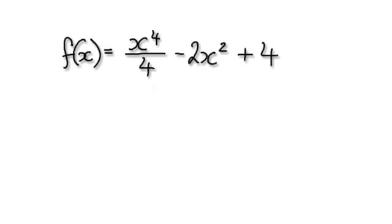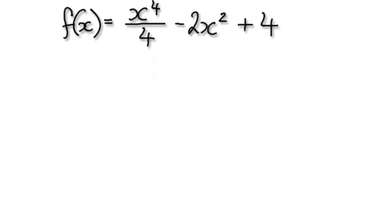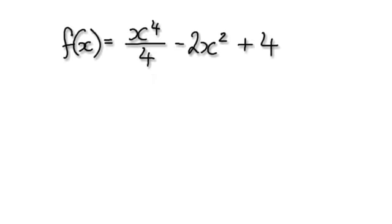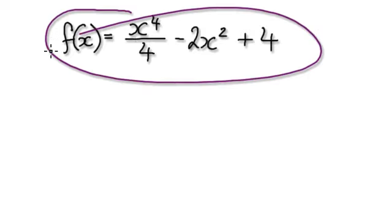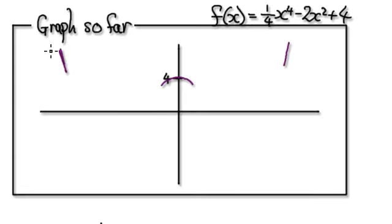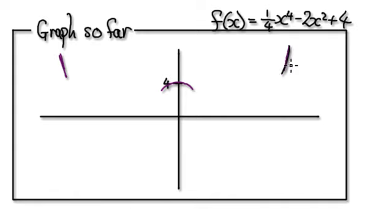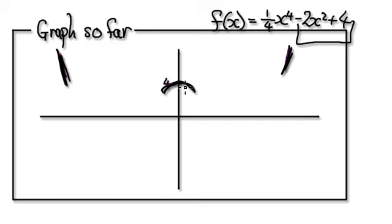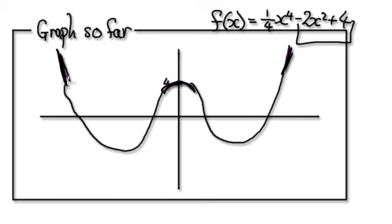Carrying on from the previous video, we were trying to sketch this function here. We got to this stage where when x is big, it wants to do this and this, and when x is small, it wants to do this thing here. So we're going to guess it to be something like this.